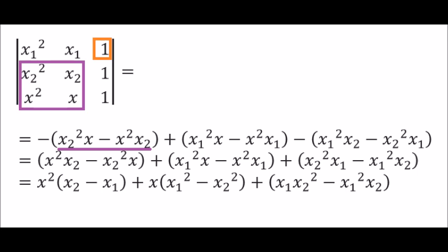Multiply x2 squared in the top left by x in the bottom right. Next, multiply x squared in the bottom left by x2 in the top right. Now subtract the second term from the first.